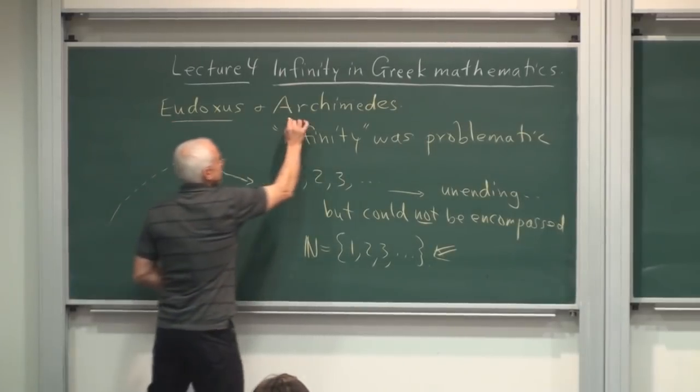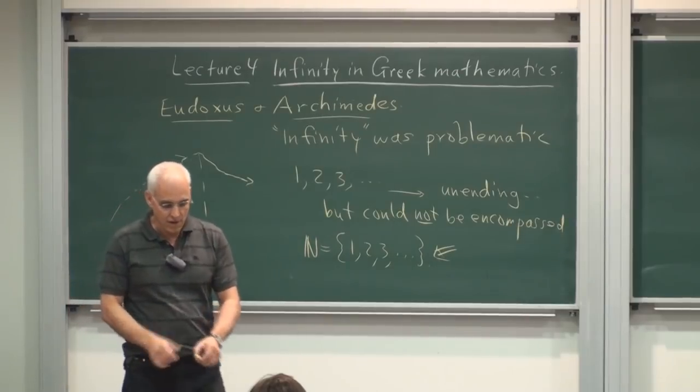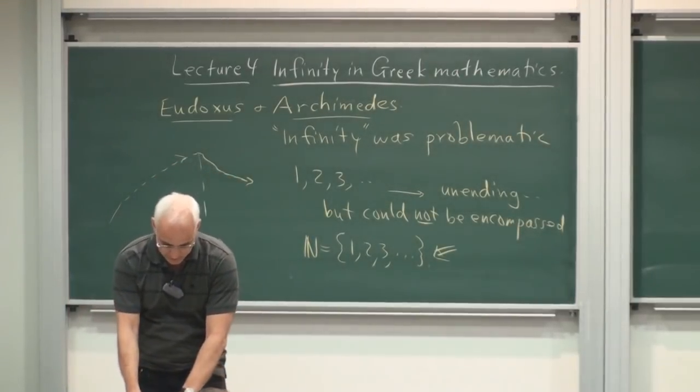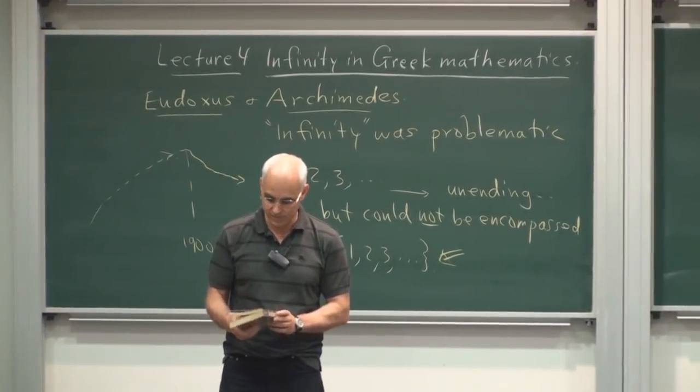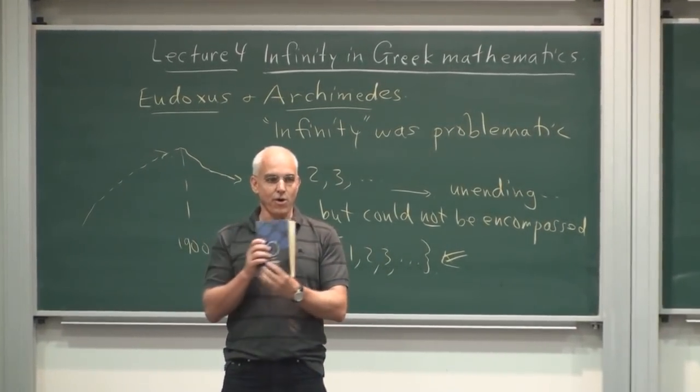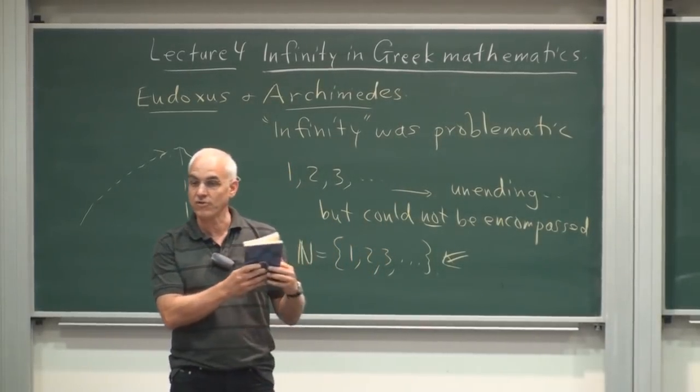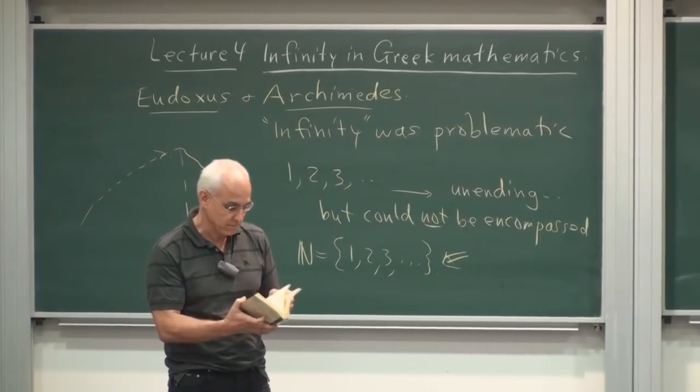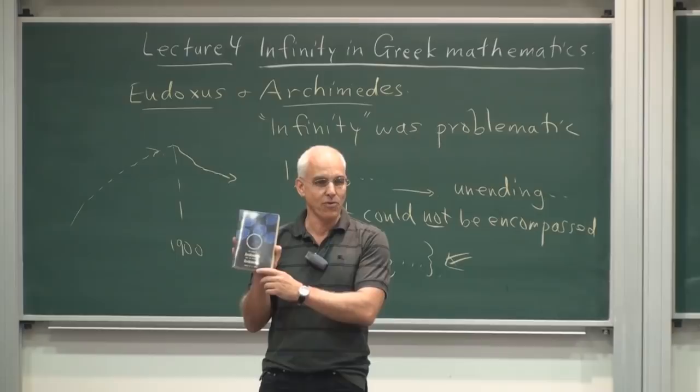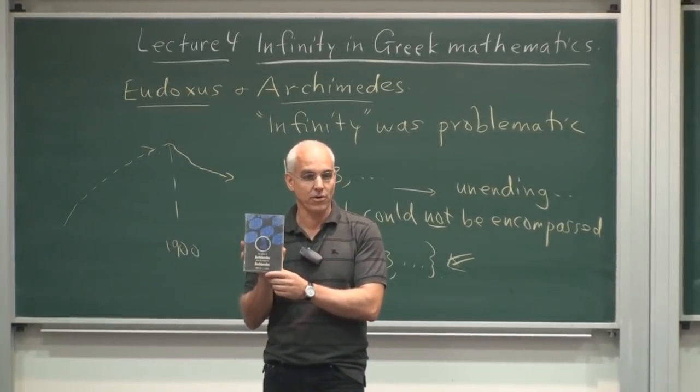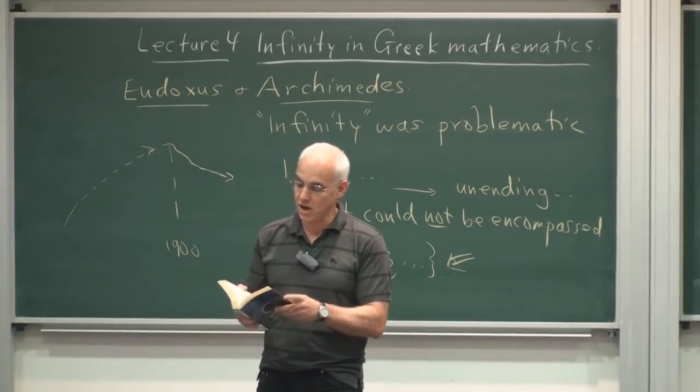Our story today concerns primarily these two great mathematicians, Eudoxus and Archimedes, and probably there's no better way of introducing the subject than to read something from Archimedes. So this is a book, it's called The Work of Archimedes, and it's a compilation of his various books. It's also a very beautiful book, it's got lots of interesting commentary.